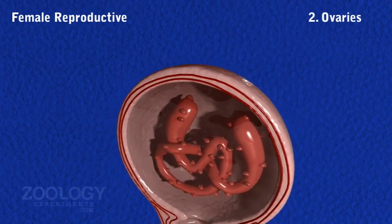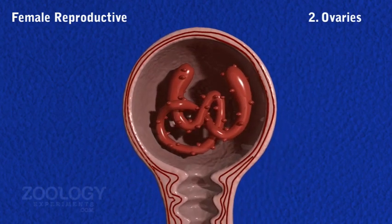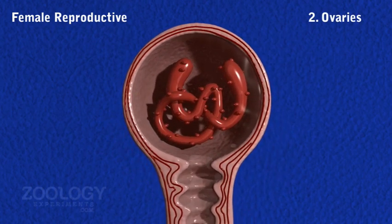Ovaries: Each ovisac is filled with coelomic fluid, in which a minute, delicate, coiled, thread-like, enucleated ovary floats, from which ova are budded off.